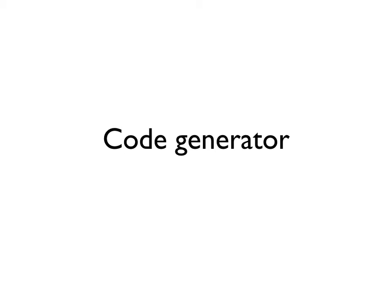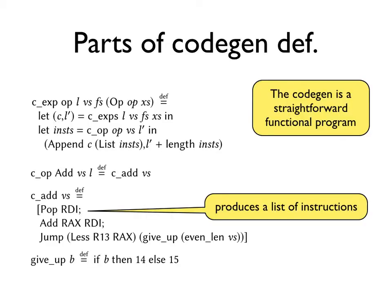Moving on to the code generator. The code generator is a functional program. It takes source AST as input and produces a list of assembly instructions as output. Here we see how the op expression is compiled, and then how add within op is compiled, and what the code for add is.